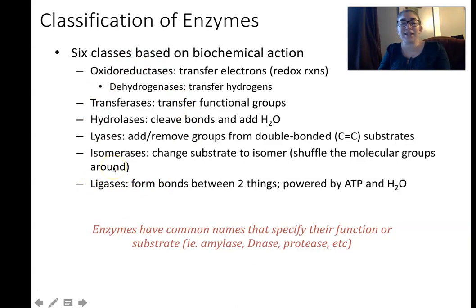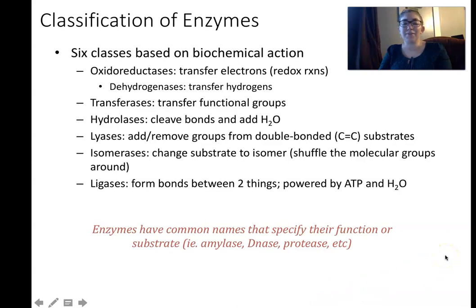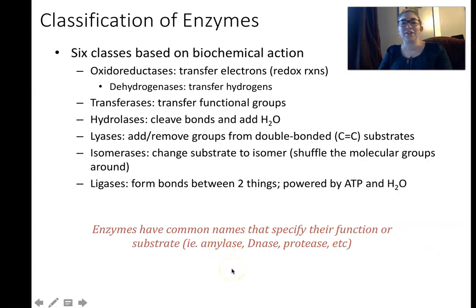Those are broad classes of enzymes. We'll encounter specific enzymes throughout metabolism with specific names. Generally, enzymes are named after their substrate — whatever they cut or work on. For example, amylase digests amylose and amylopectin, which are starches. DNase cuts DNA, and so on.